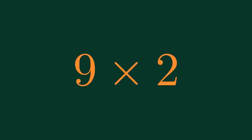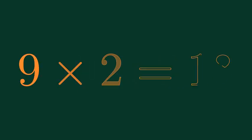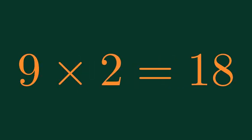What is 9 times 1? 9 times 1 is equal to 9. 9 times 9 is equal to 18.